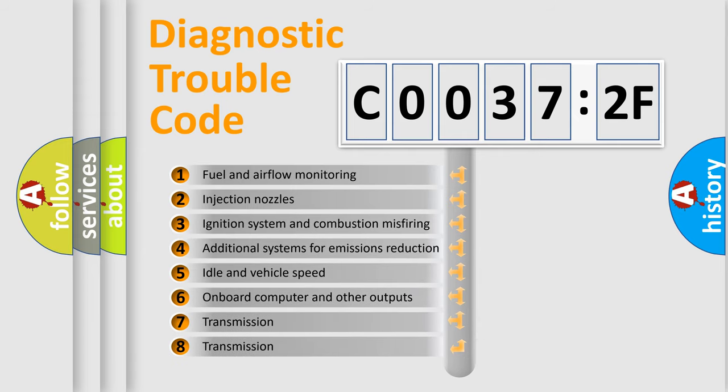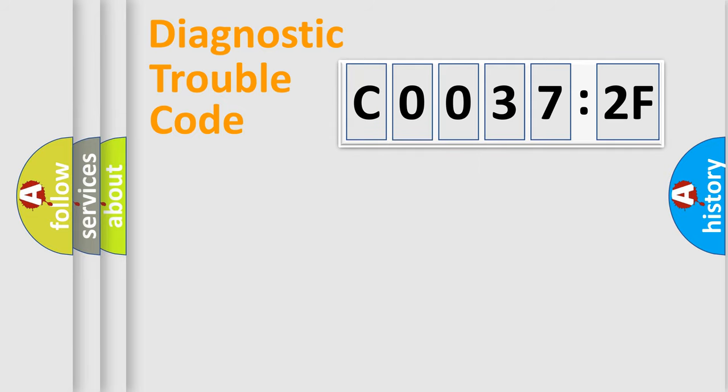The third character specifies a subset of errors. The distribution shown is valid only for the standardized DTC code. Only the last two characters define the specific fault of the group.